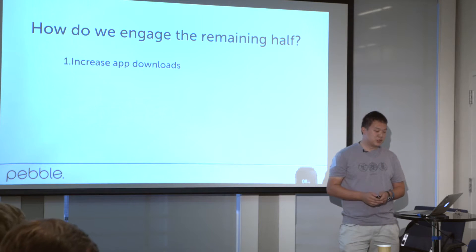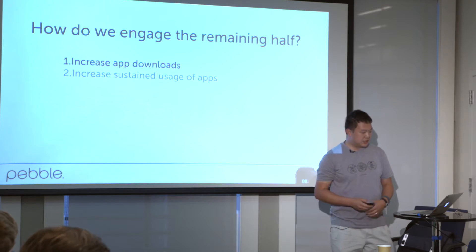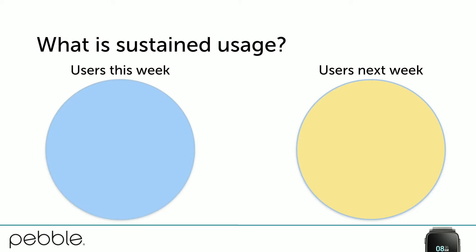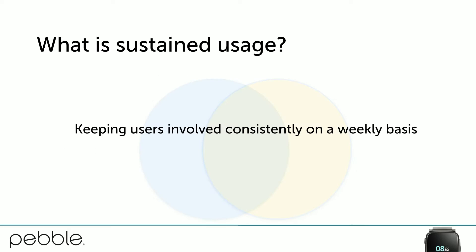One of Pebble's goals is to increase app downloads. Getting more downloads leads to more app usage, more users trying apps out. The second goal is to increase sustained usage of apps. We have a simple diagram: on the left in blue, a population of users who use your app this week; on the right, users who use your app next week. Between any two weeks, there are users who leave, new users who join, and a population in the middle that continues. Sustained usage means getting users to continuously be involved on a weekly basis.